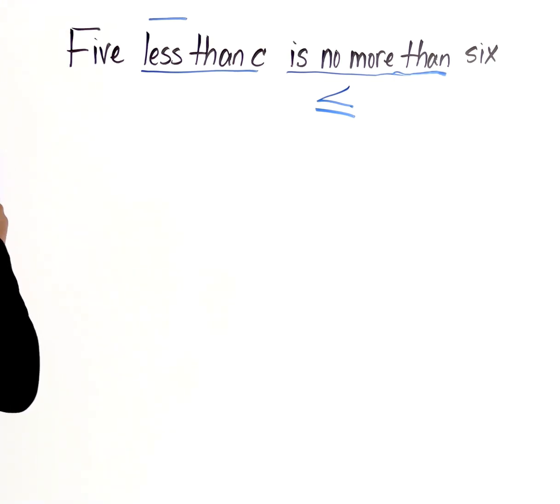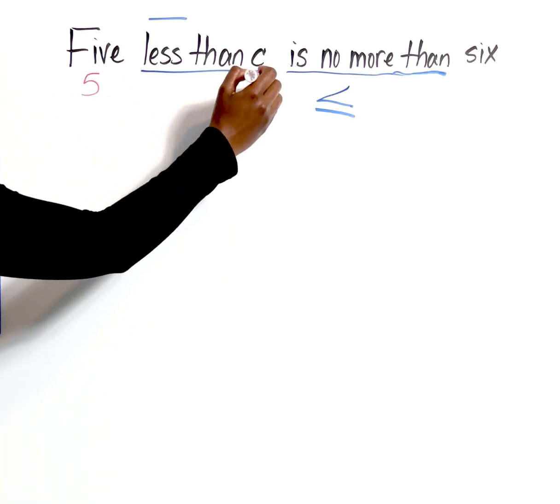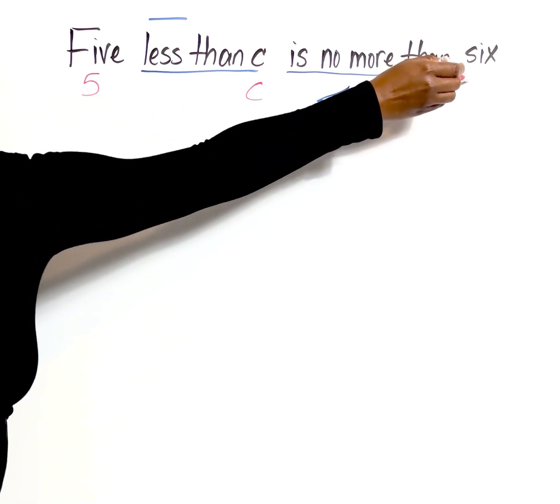And then of course we're going to go back and we are going to fill in our values and our variables. So we have 5, we have C, and we have 6.